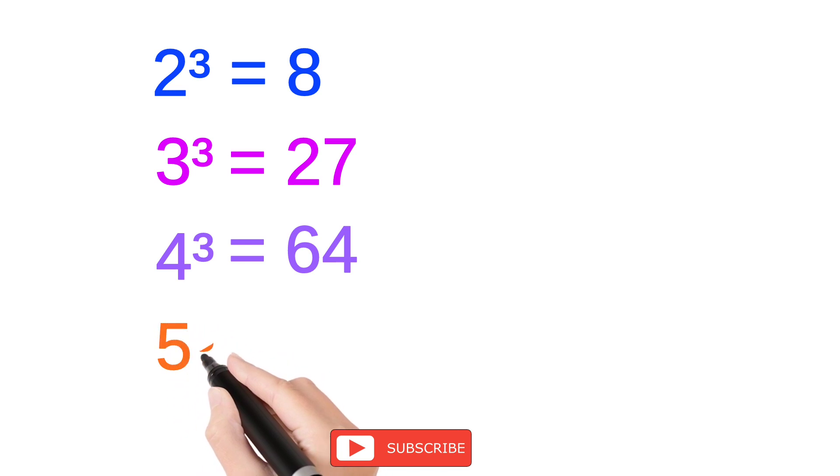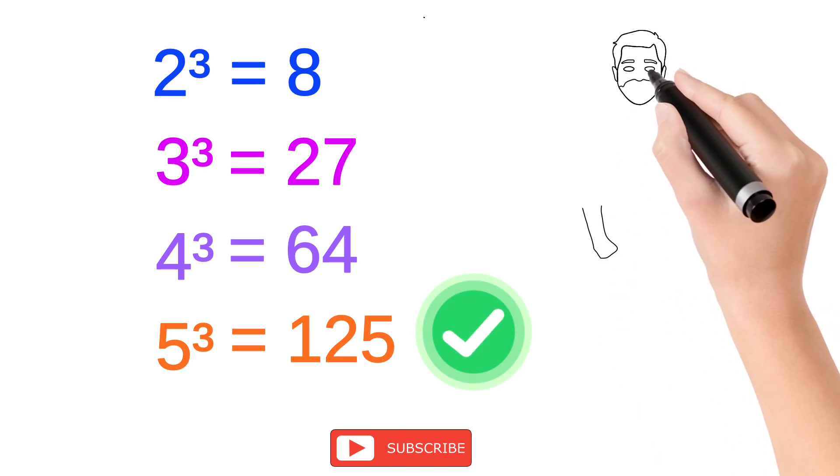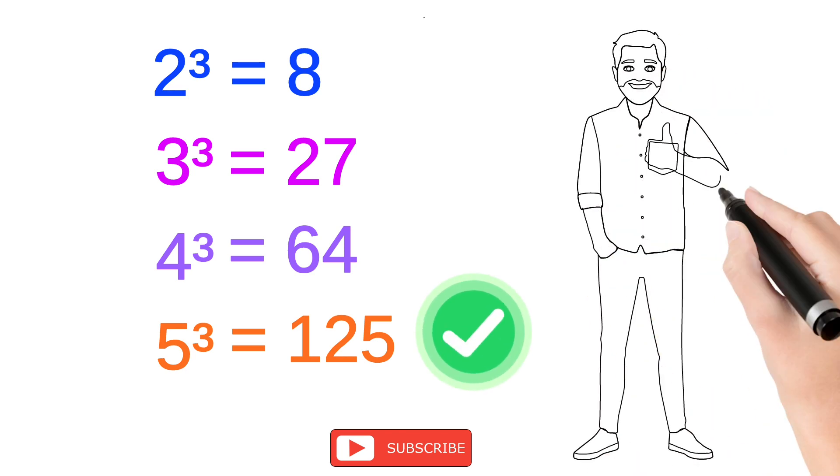Similarly, 5 cubed equals 125. Therefore, 125 is the correct answer to the question. Hope you understood the concept.